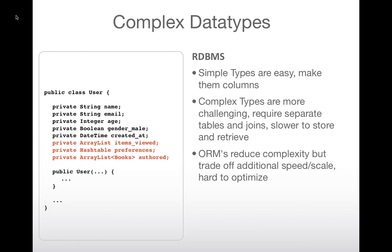Here's an example: in this Java user class, I have an ArrayList and a hash table of certain types of books. This can't be represented in a single table — I have to have multiple tables, joins, foreign keys, and logic to store and retrieve it. As long as you have simple types, it's easy in relational systems. But once you get into complex types it gets harder, and often we use ORMs to hide this from us, though optimizing ORM-generated queries is trickier and ORMs are a bit slow.